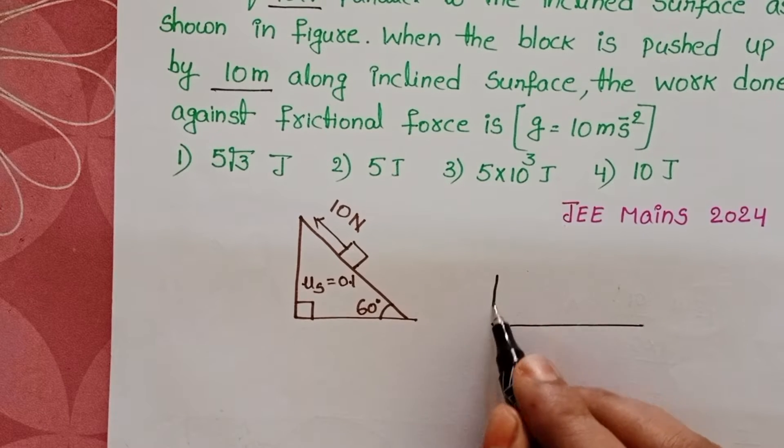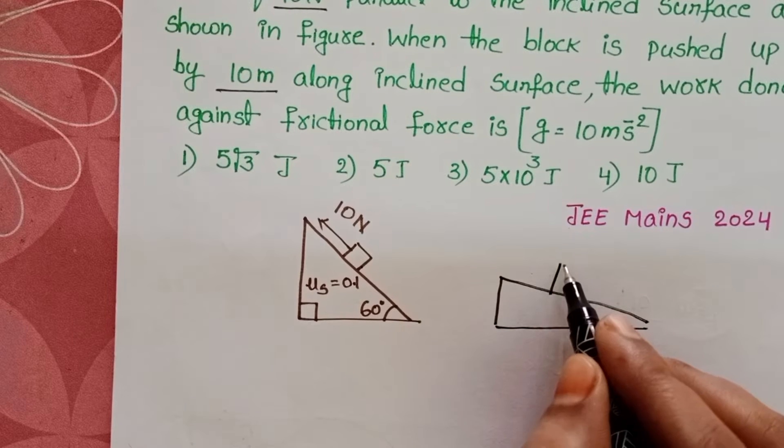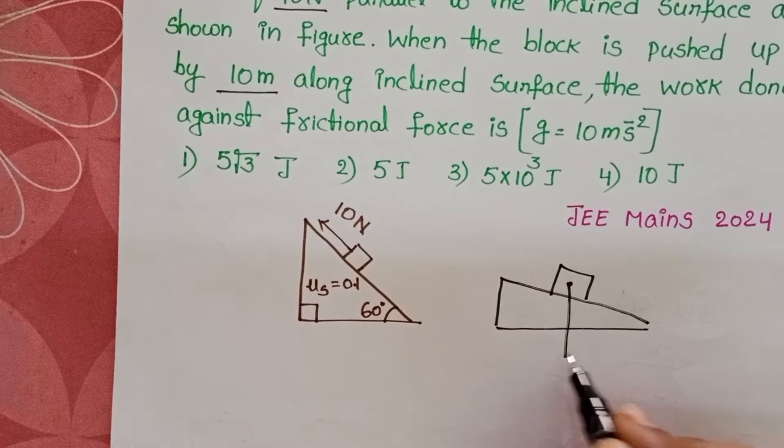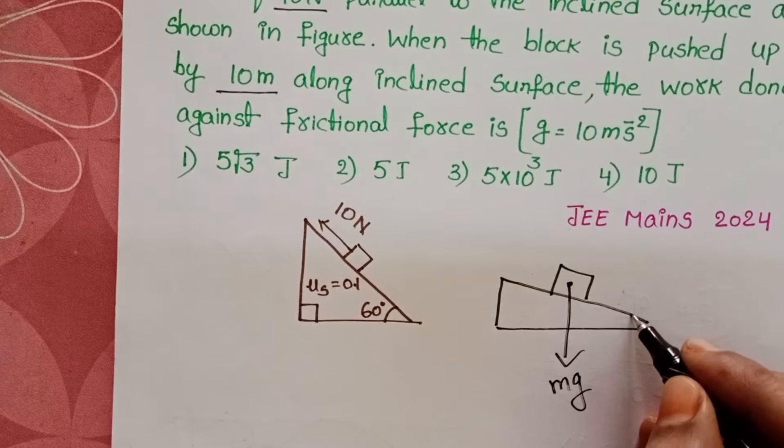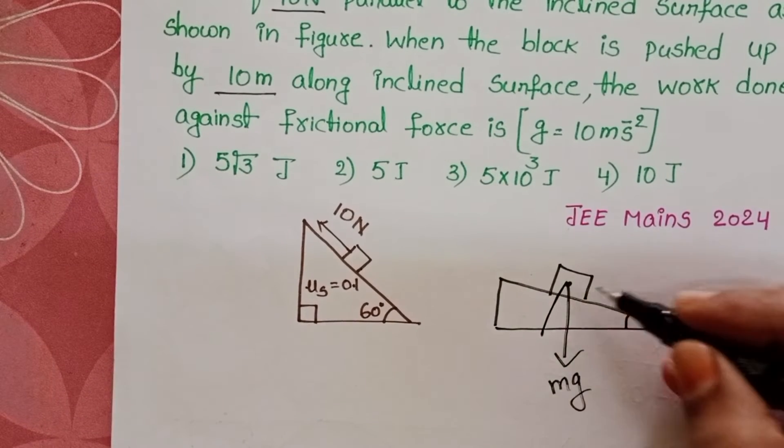When any body is placed on the inclined plane, the weight of the body is resolved into two components. Actually this is the direction of the weight of the body. But here the angle of inclination is 60 degrees, so weight is resolved into two components.